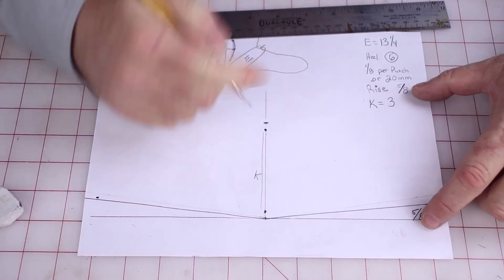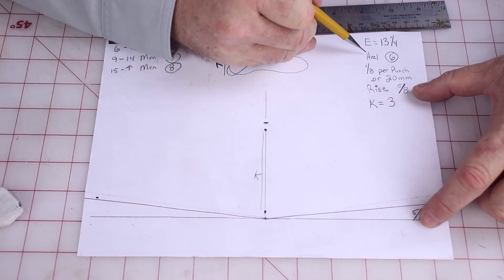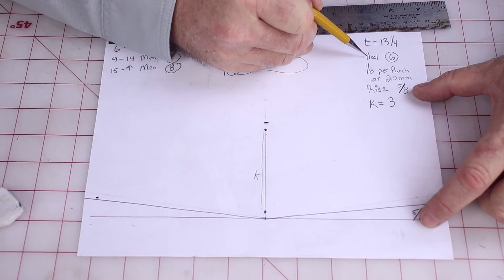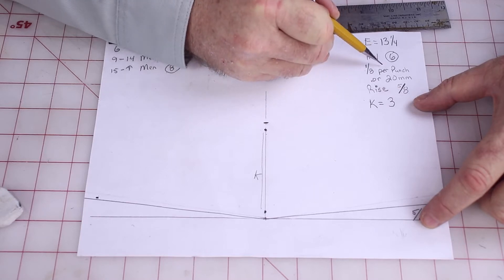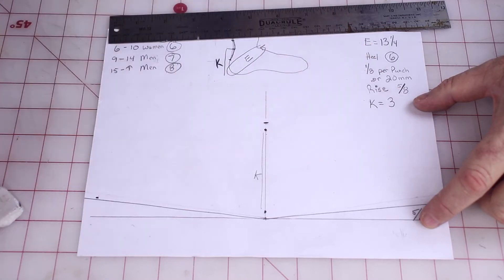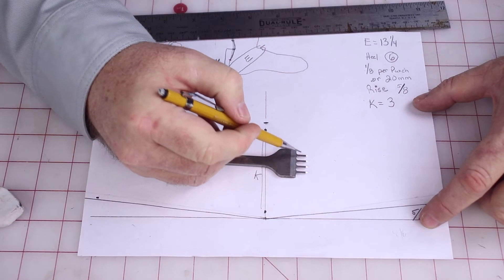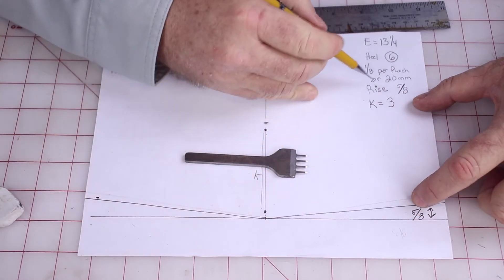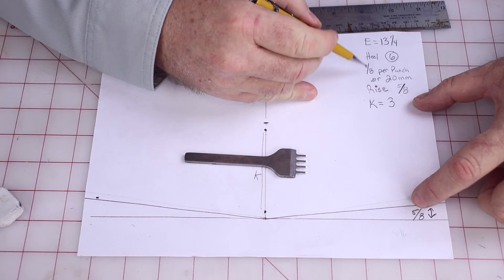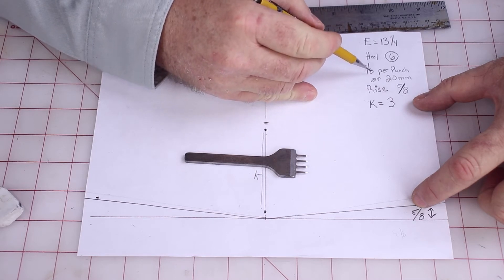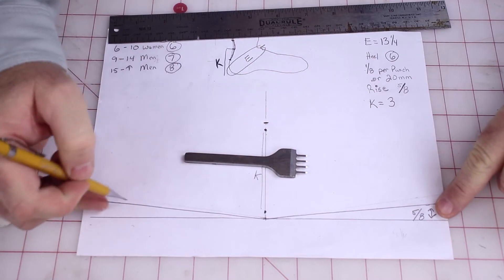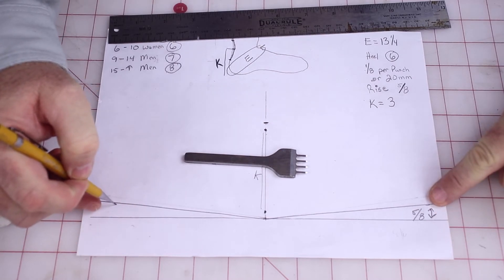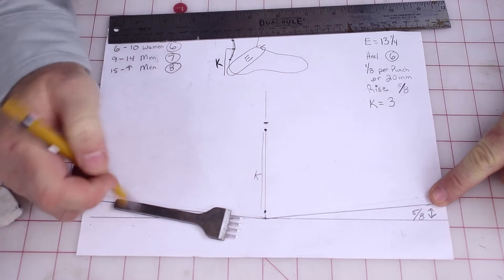So we know that our rise, this is our E, this is our heel, we picked six. This piece of information is new and that is one eighth inch of rise per punch or 20 millimeters. So using our four hole punch, every time we use this, we want our rise and our heel to basically equal one eighth per, we're going to use it five times. So that's five eighths. So I've done a five eighths line here and here to show you the rise. And now we've interpreted K.